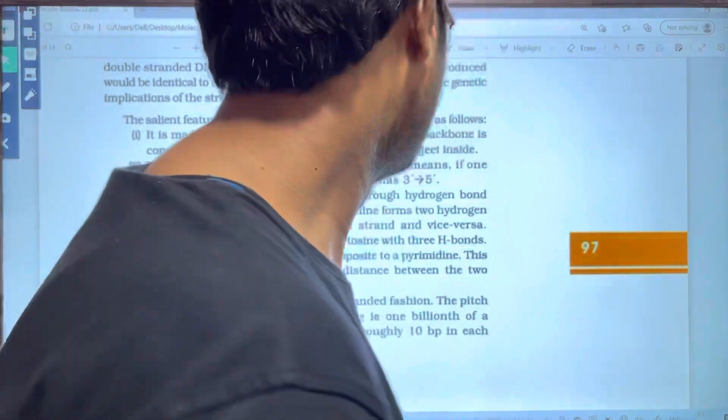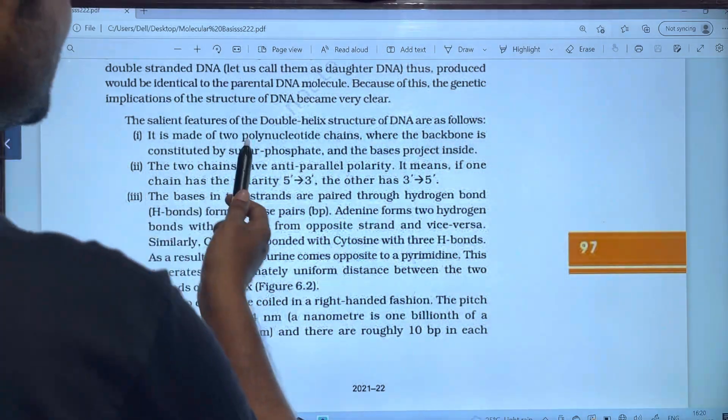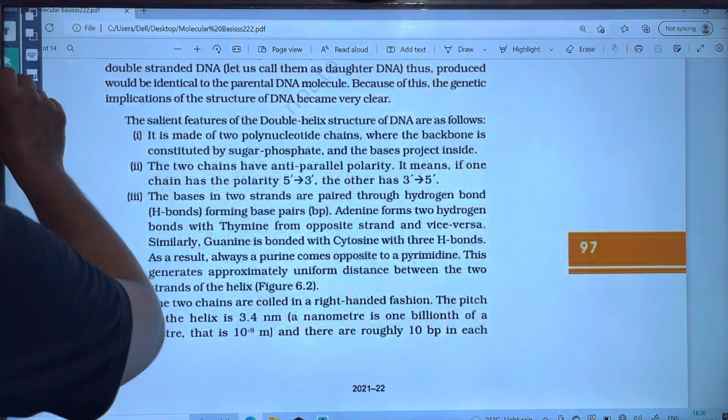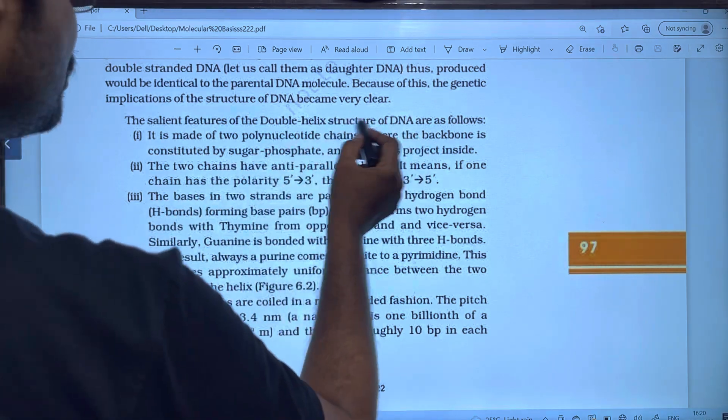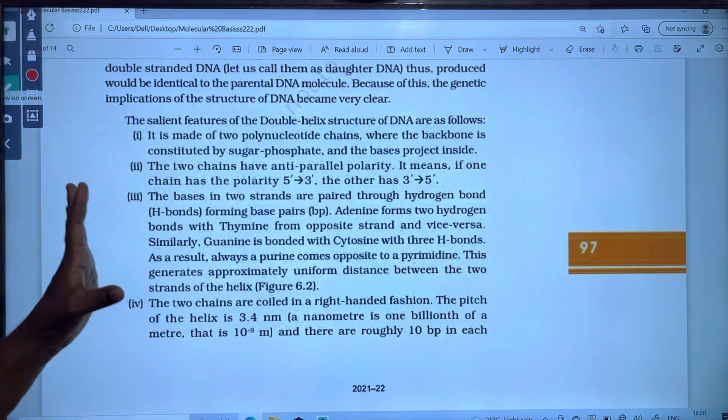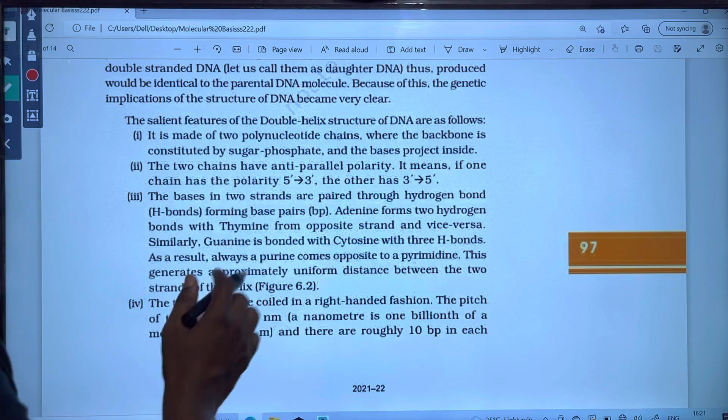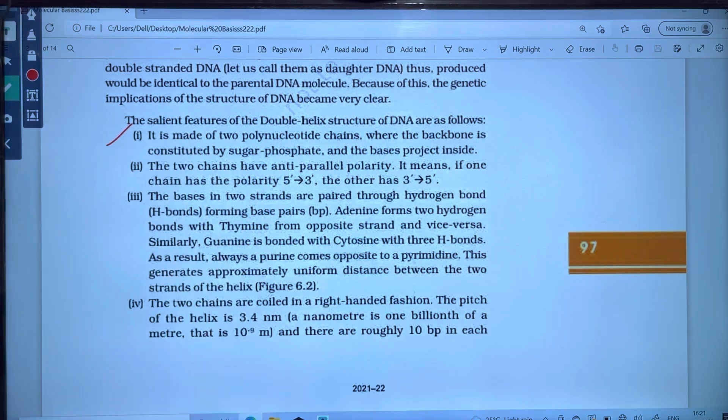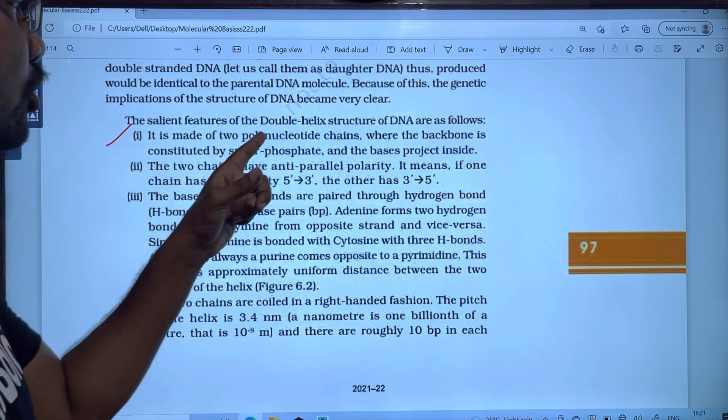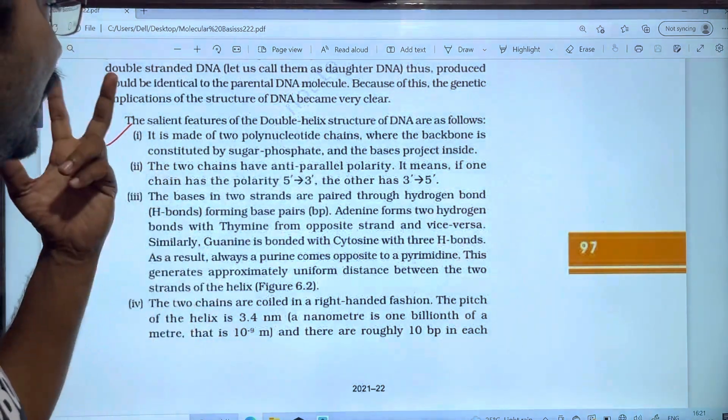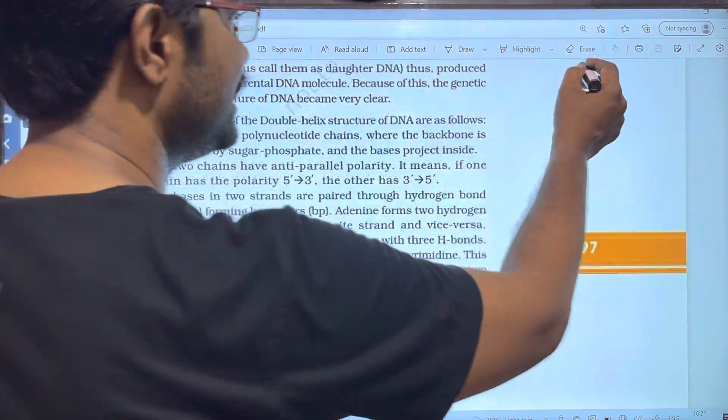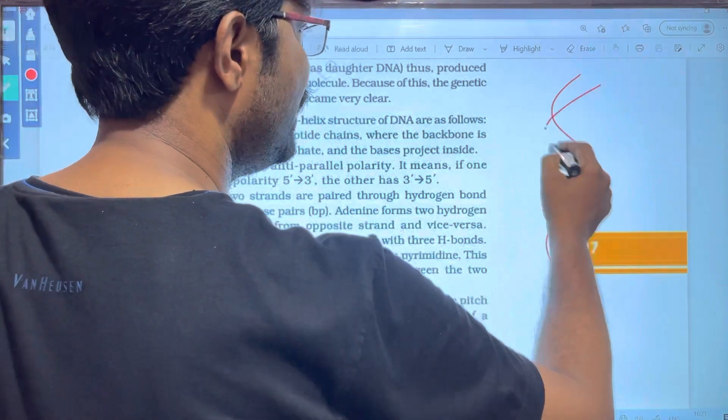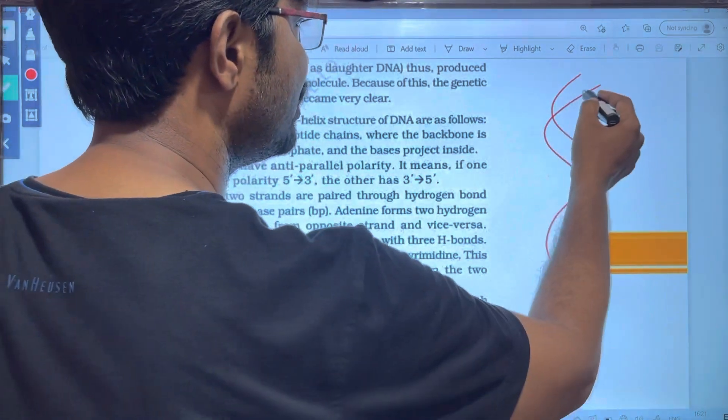We are going to discuss the seven features of double helix structure. DNA has a double helix structure. First of all, it is made up of two polynucleotide chains.